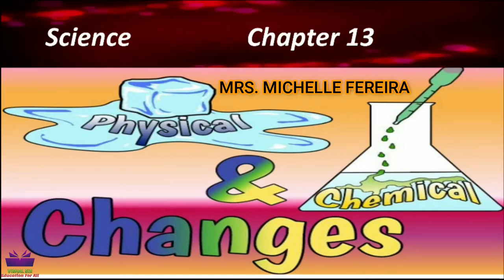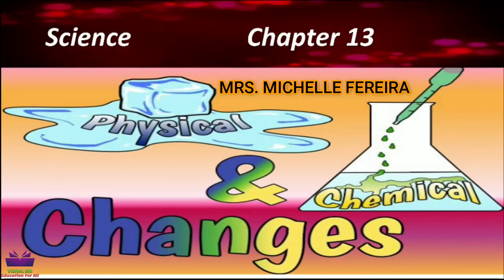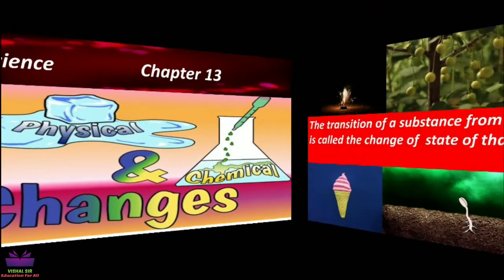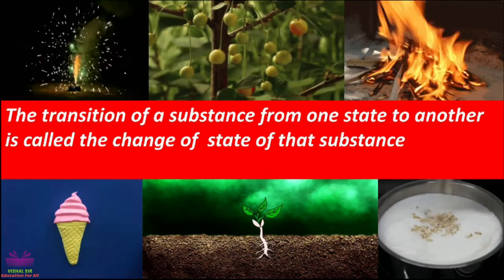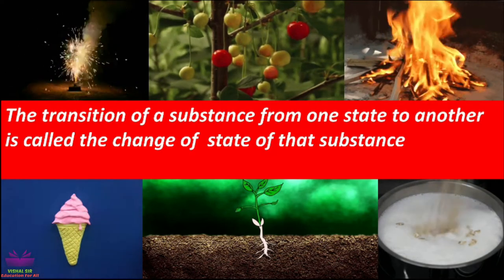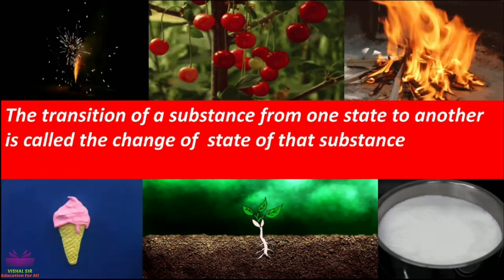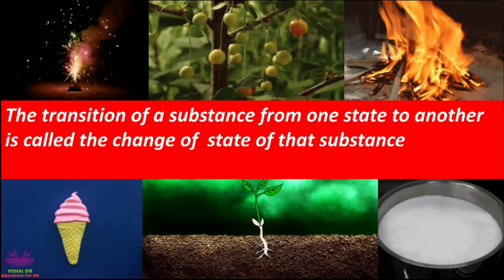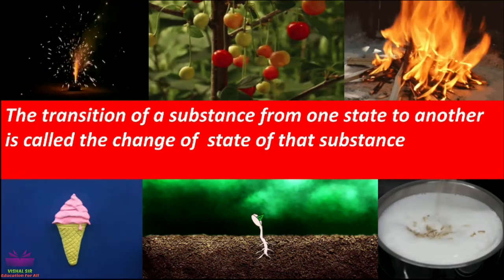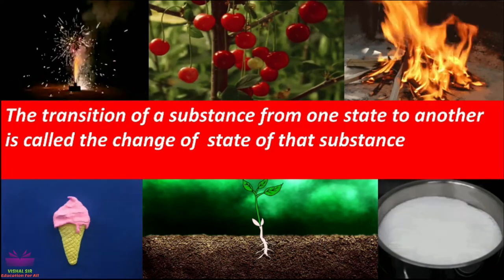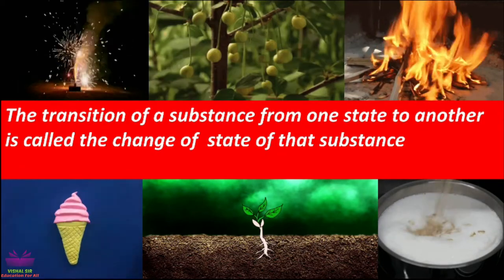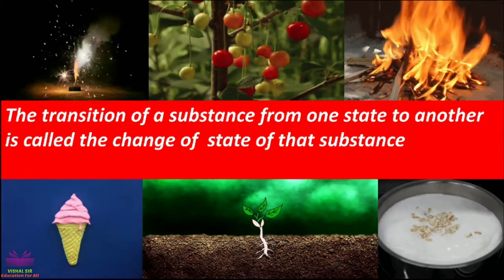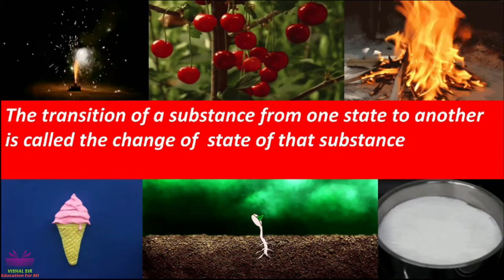Standard 7, Chapter 13: Physical and Chemical Changes. Look at the pictures on the screen. We often observe different changes taking place in our surroundings. These changes take place continuously. At times, we are not even aware of these changes around us. Let us see what changes have taken place in the materials shown in these pictures.